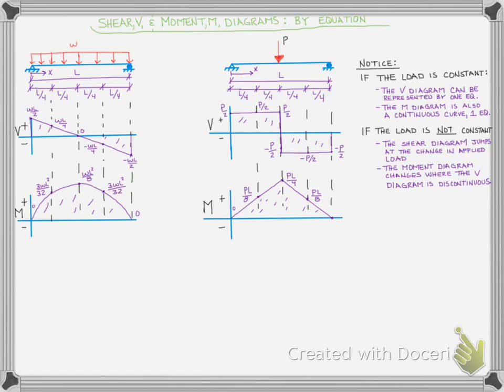All they are are graphical representations of how the internal shear or the internal moment on a beam due to a given load—the load's not changing, due to one specific load—how does the internal shear and how does the internal moment vary along the length?